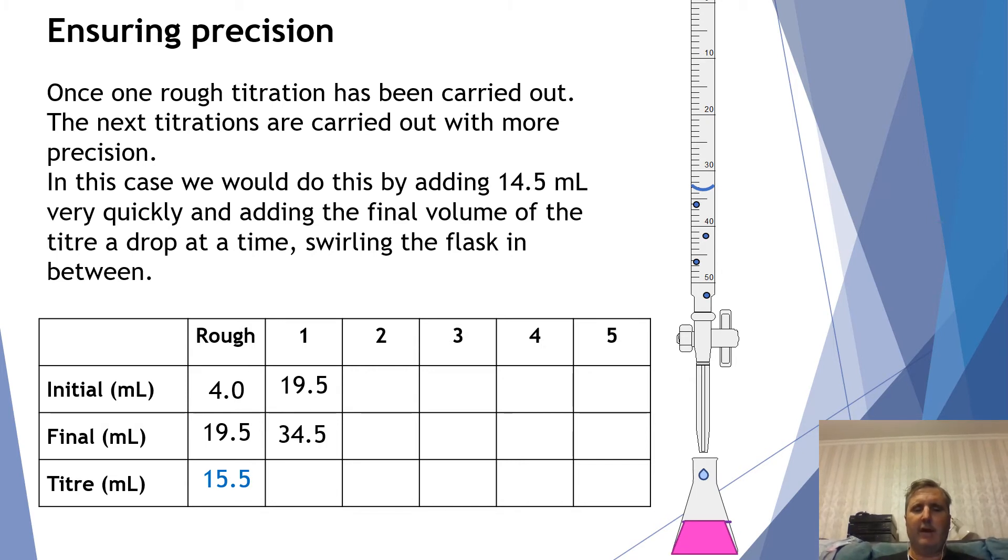So I do that and I get a value here of 34.5 and notice my next titer value is a bit smaller than in my rough. I'm more confident in this titer value and I'm going to call it one of the titer values that's going to be titer 1 that I might include in the actual values that I will collect for the final result.